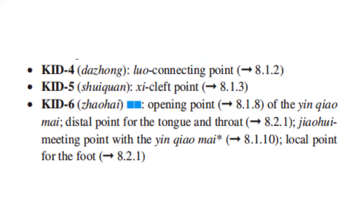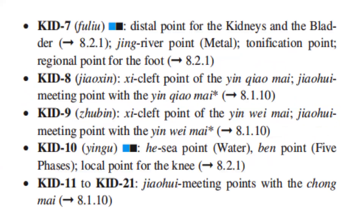Kidney 4 is the Luo Connecting Point. Kidney 5 is the Xi Cleft Point. Kidney 6 is the opening point of the Yin Qiao Mai, the distal point for the tongue and throat, the Jiao Hui meeting point with the Yin Qiao Mai, and the local point for the foot. Kidney 7 is the distal point for the kidneys and bladder, the Jing River Point which is also the Metal point, the tonification point of the kidneys, and the regional point for the foot. Kidney 8 is the Xi Cleft Point of the Yin Qiao Mai and the Jiao Hui meeting point of the Yin Qiao Mai.